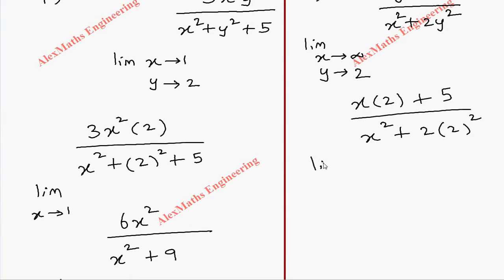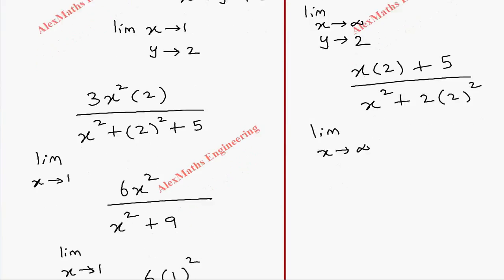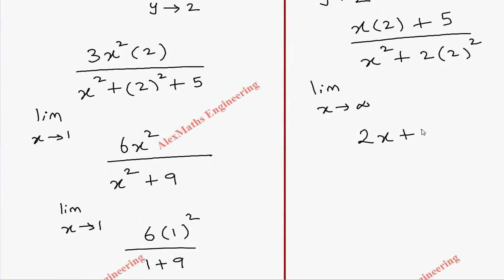Still we have to write limit x tending to infinity. Now numerator is 2x plus 5. Denominator is x square plus 2 square is 4, 4 times 2 is 8.